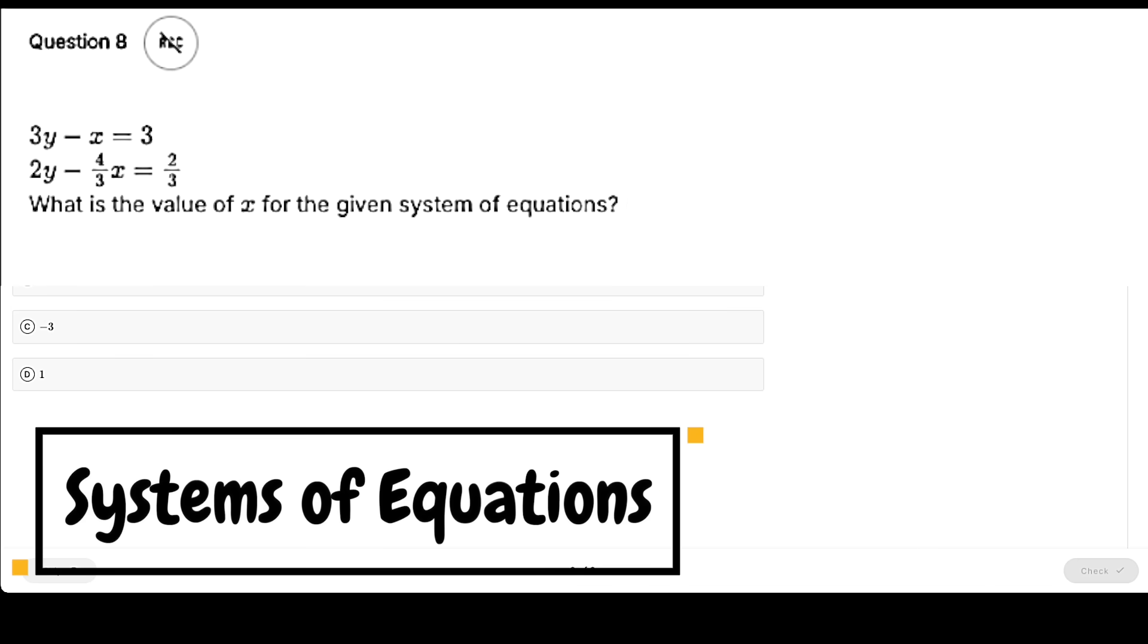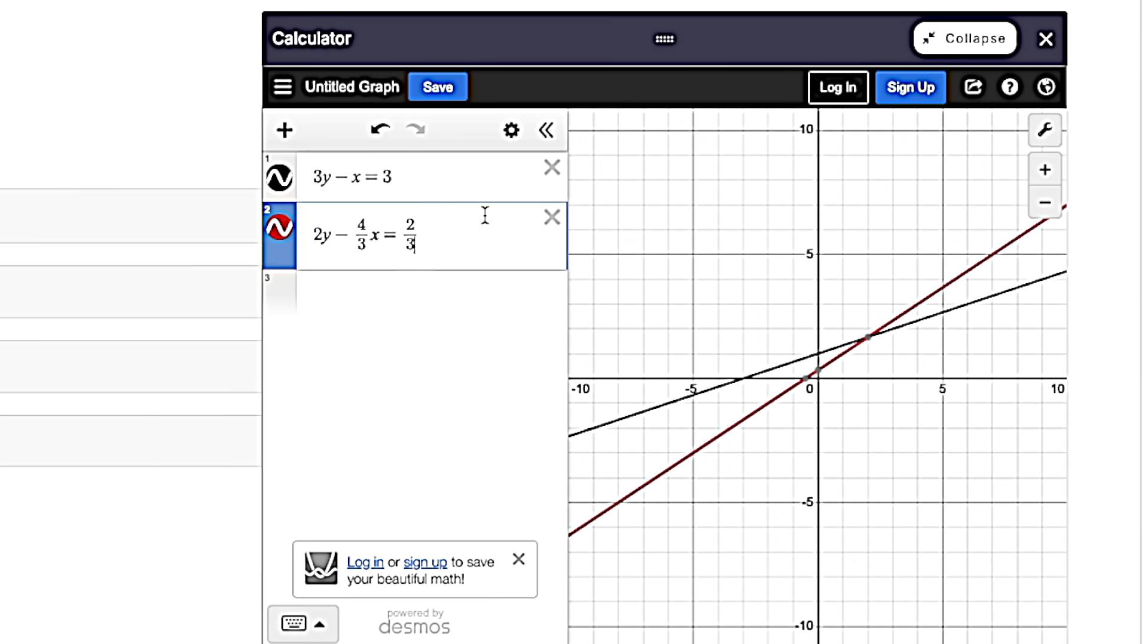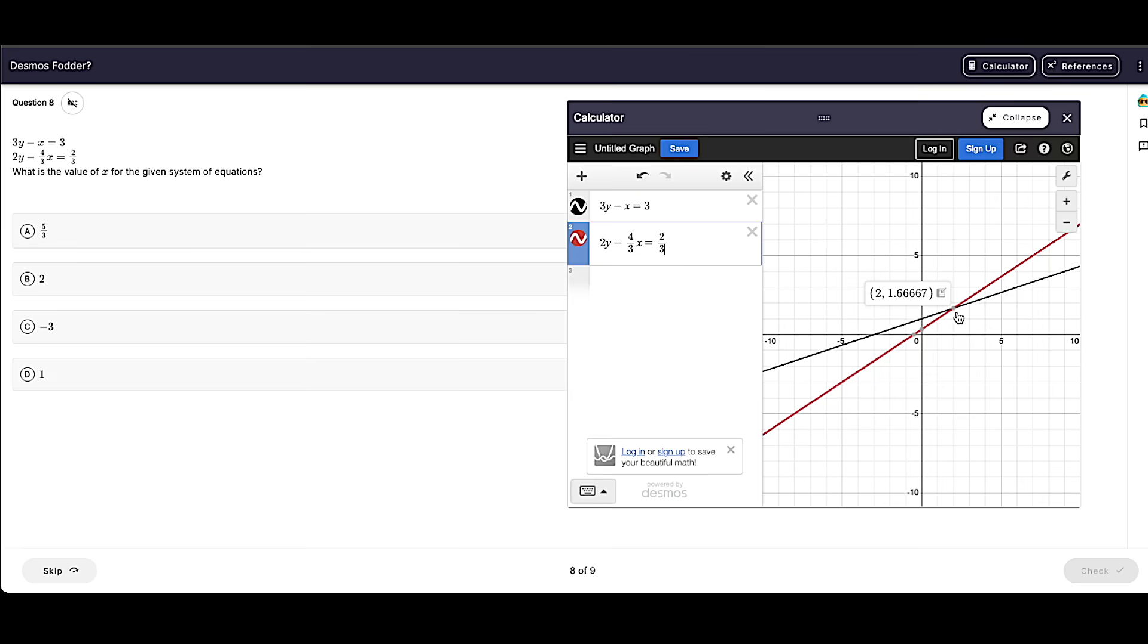we've got good old-fashioned systems of equations. This is one of the best things Desmos can do. You just plug in both of your equations, and your solution is going to be where they touch. And not only can you see it, but they're going to create a little point for you. And we know that our solution is two, just like that.